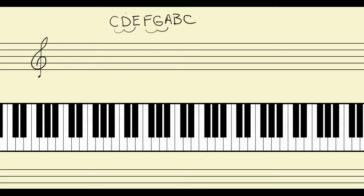If I start on D and I go up the interval of a third, then I go D, E, F. One, two, three — D, E, F. That's the interval of a third. You may have noticed, though, that not all thirds are created equally.